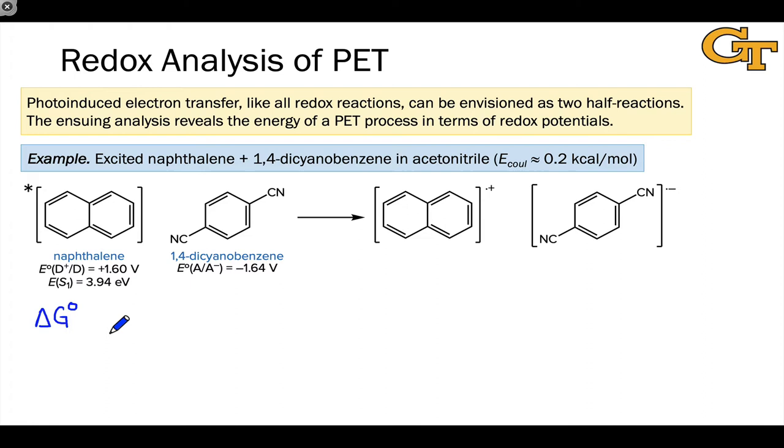The situation here is we have photoexcited naphthalene reacting with 1,4-dicyanobenzene in an oxidative quenching of the excited state to form the radical cation of naphthalene and the radical anion of 1,4-dicyanobenzene. Thermodynamically speaking, three things are happening here.